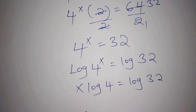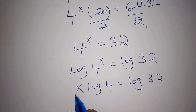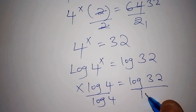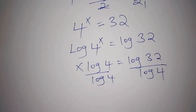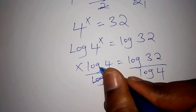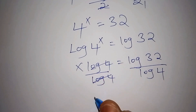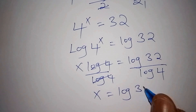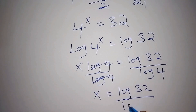From there we can divide both sides by the log of 4 so that this side we are left with x. This side also we divide by the log of 4. So the log of 4 and the log of 4shall cancel, and we shall have x is equals to the log of 32 all over the log of 4.